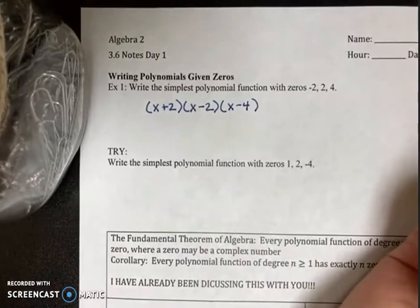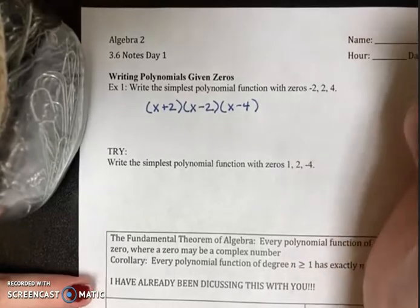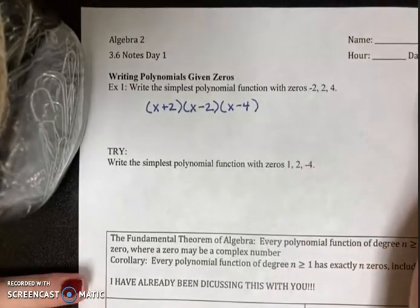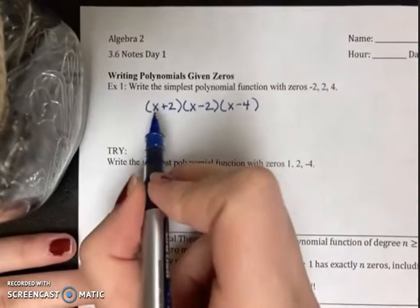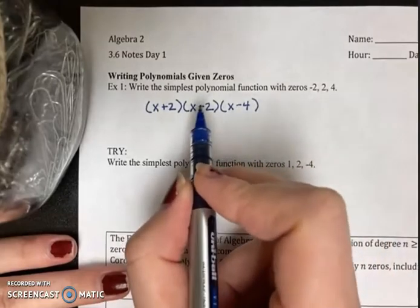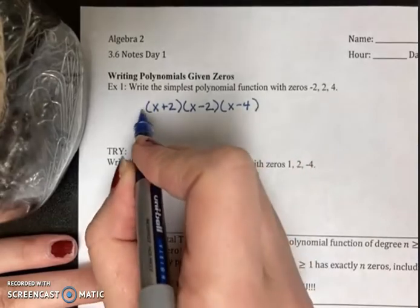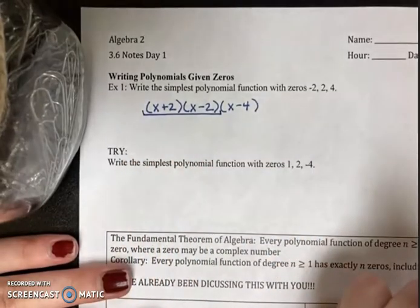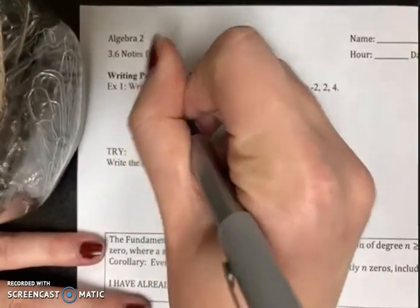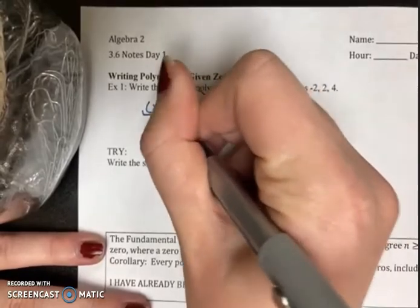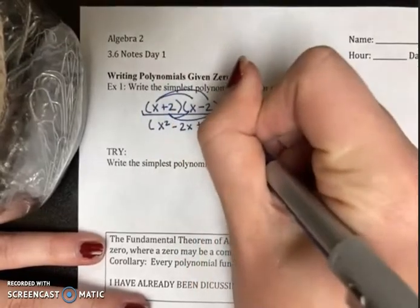Now to write the polynomial function we do have to multiply all of that out, but you've already learned this earlier in chapter 3 when multiplying polynomials. Take it one step at a time. First multiply the first two binomials: x times x is x squared, x times negative 2 is negative 2x, 2 times x is 2x, and 2 times negative 2 is negative 4.